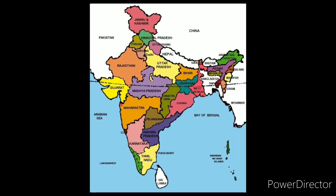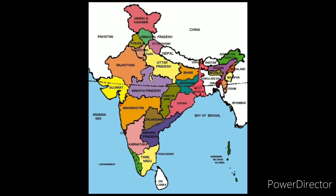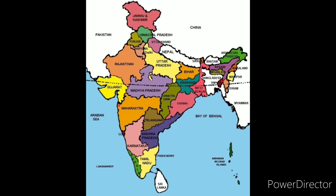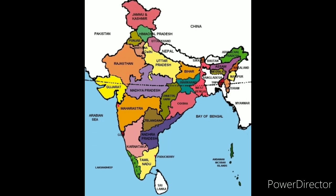India has a total of 28 states and 8 union territories. Let us start from the north.